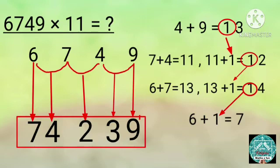Then add 4 and 9. 4 plus 9 equals 13. Write 3 to the left of 9 and carry forward 1 to the next sum.